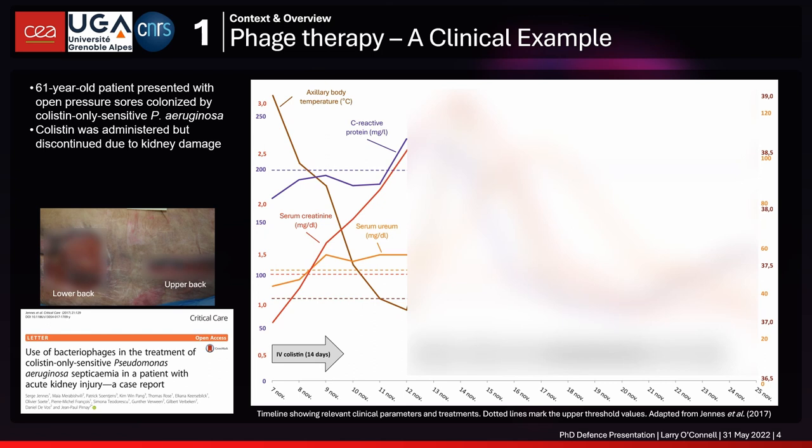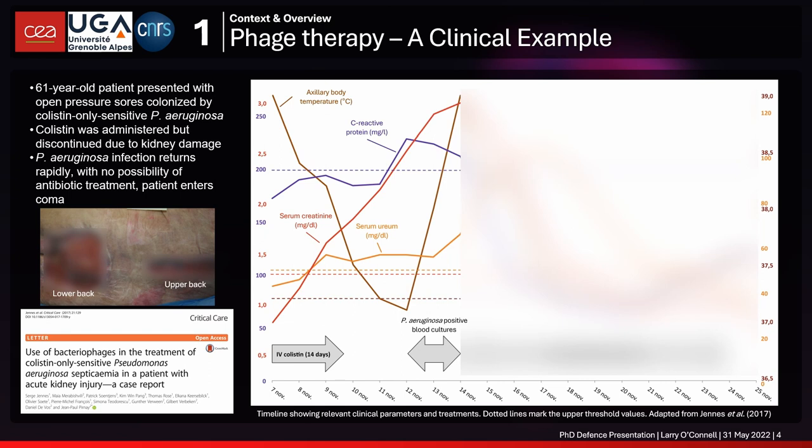Rising serum creatinine is a clinical indicator of kidney damage. Once antibiotic treatment was stopped, the Pseudomonas aeruginosa infection returned very quickly. At this point, the patient found themselves in a position we may all become more familiar with in the years to come — an antibiotic-resistant infection with death imminent and no antibiotic treatment available.